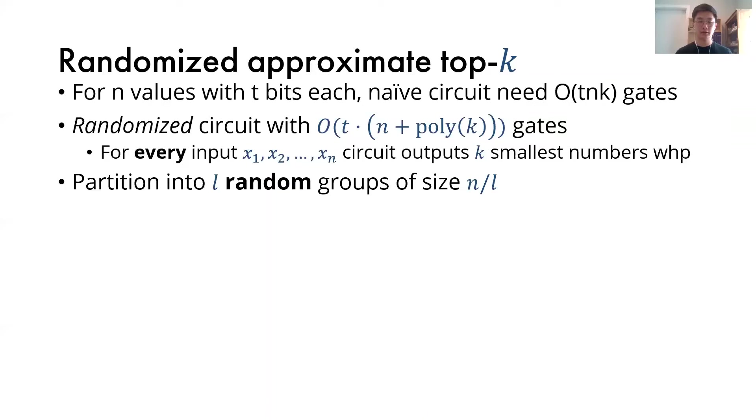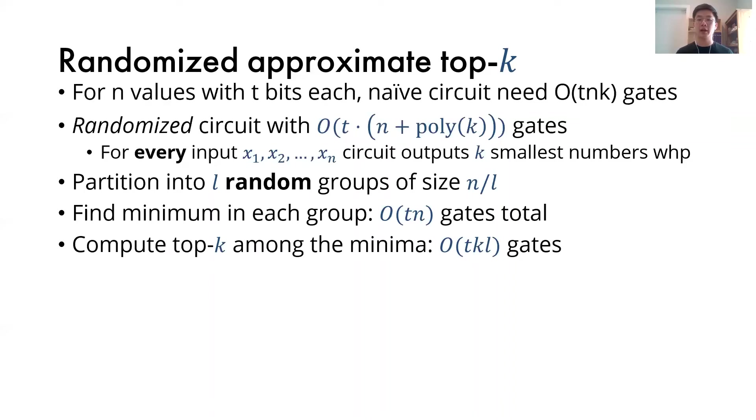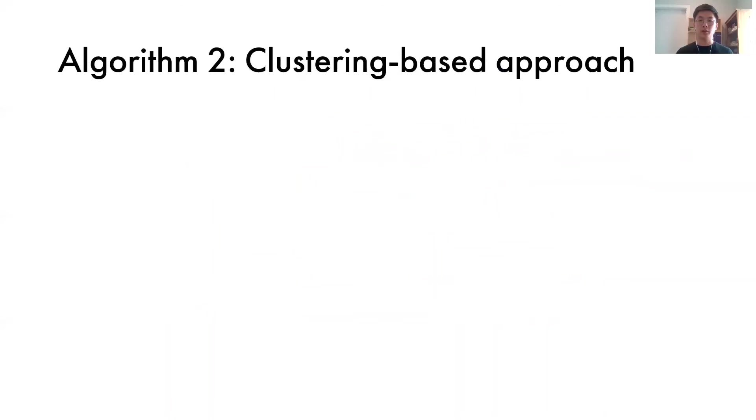The algorithm starts with partitioning the n points into l random groups, each with the same size. Then it finds the minimum in each group. Finally, it computes the top-k among the l minimum numbers. We can choose this l in a good way, such that the correctness probability is high.